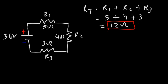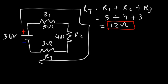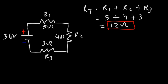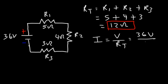Step 2 is to calculate the current in the circuit. Because there's only one path for current to flow, all three resistors are in series. The current equals the battery voltage divided by the total resistance: 36 volts divided by 12 ohms gives us a current of 3 amps.